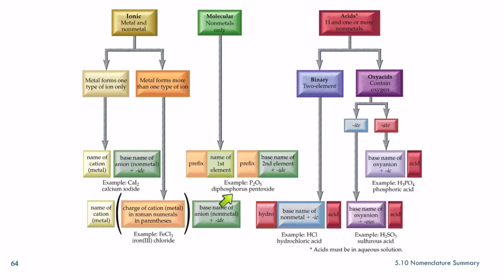The prefix for 2 is di, and that first element is phosphorus. So diphosphorus pentoxide. So 5 is penta, oxygen becomes oxide, and there we dropped the A on the penta.